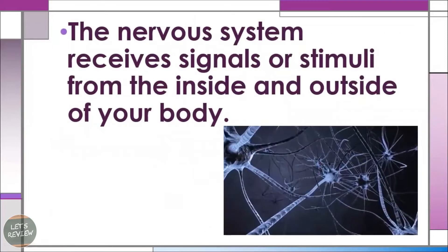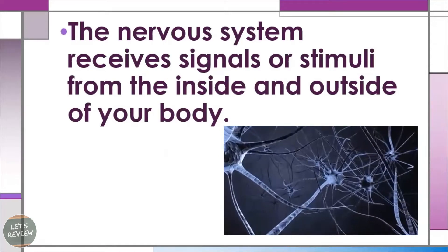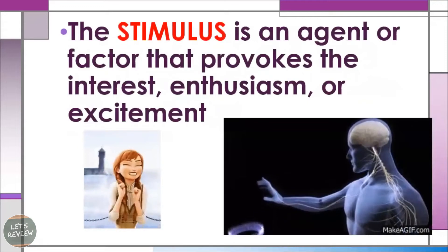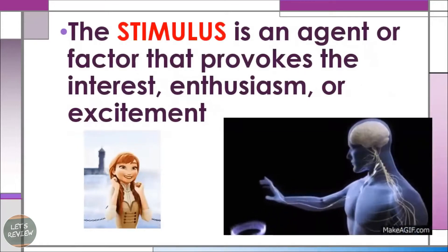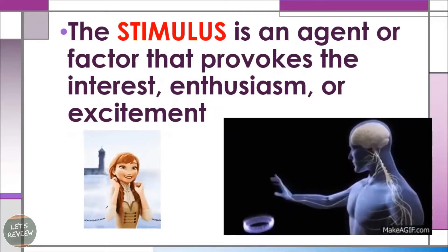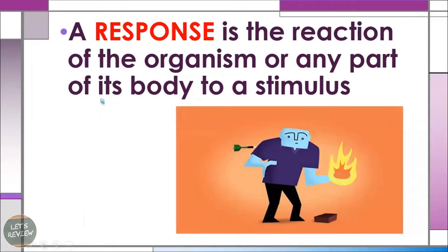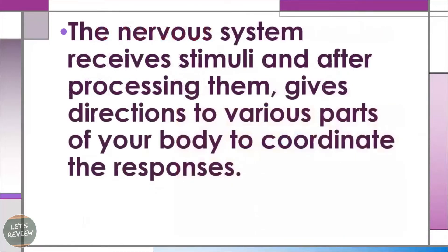The nervous system is the one that receives signals or stimuli from the inside and outside of our body. A stimulus is a factor that provokes a response — it can cause enthusiasm or excitement in humans. Response is the reaction of the organism, or any part of its body, to that particular stimulus. It may be pain, or feelings like happiness and sadness. The nervous system receives stimuli and, after processing them, gives directions to various parts of your body to coordinate responses.